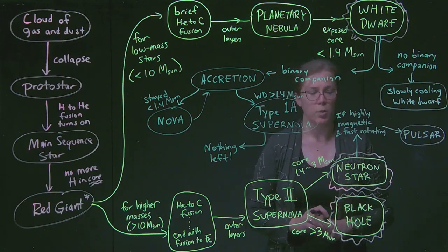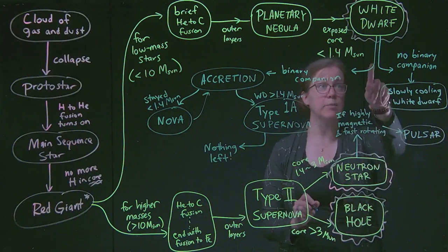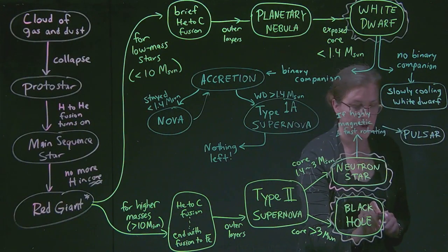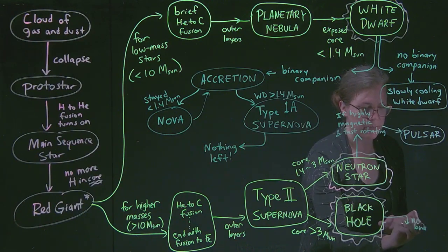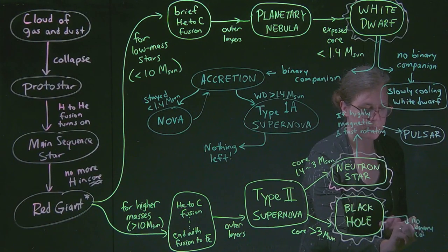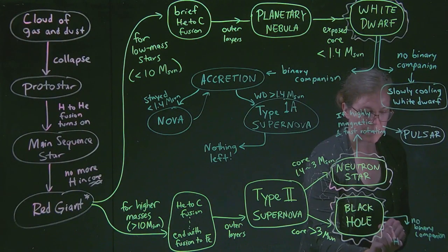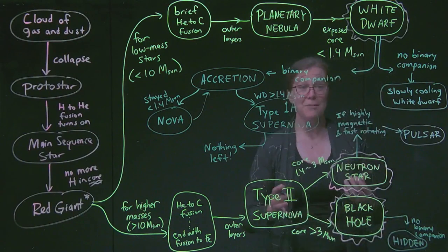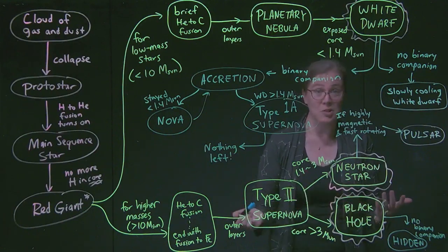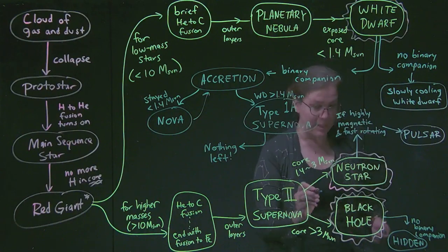The rest of them are just kind of hidden away. And then black holes have the same split that white dwarfs do, that if they have no companion, so no binary companion, then they are hidden. I don't know. That's not a fancy science term, but it is hard for us to find them.